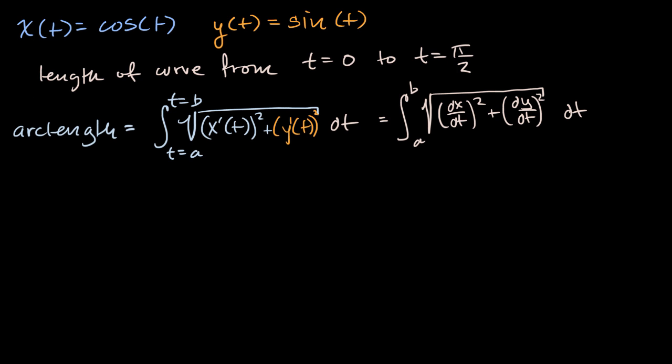What is dx/dt? So dx/dt is equal to, the derivative of cosine of t is equal to negative sine of t. And what is dy/dt? The derivative of y with respect to t. Derivative of sine of t is cosine of t.